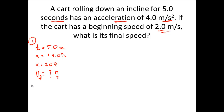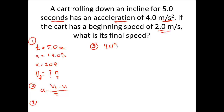The next thing I'm going to do is list the formula. It's the standard acceleration formula: acceleration equals the final velocity minus the initial velocity divided by time. The acceleration was given as 4.0 meters per second squared equals VF minus the initial velocity of 2 meters per second, divided by the time of 5.0 seconds.